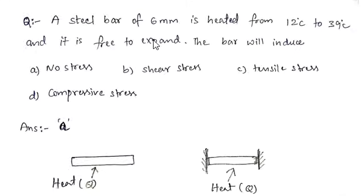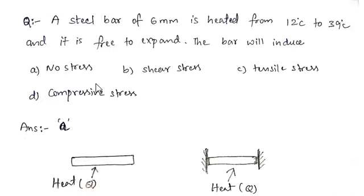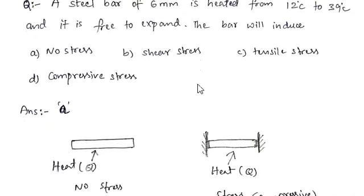A steel bar of 6mm is heated from 12 degrees centigrade to 39 degrees centigrade and it is free to expand. The bar will induce: option A no stress, option B shear stress, option C tensile stress, option D compressive stress. The answer is option A, no stress.